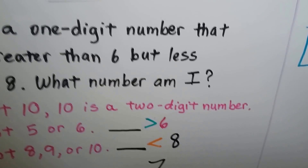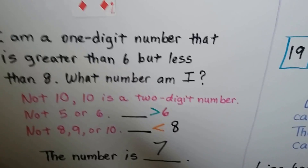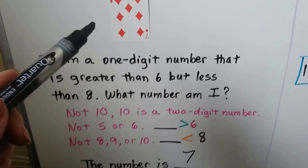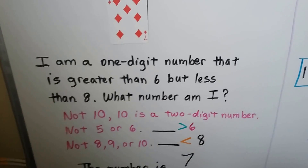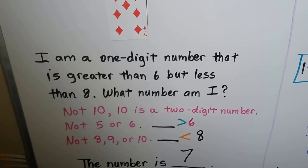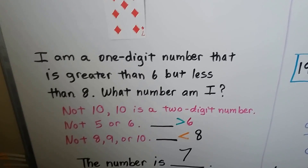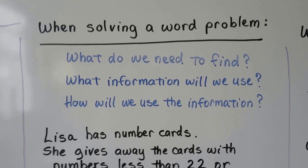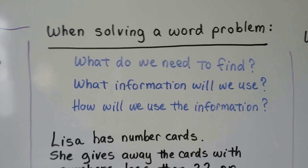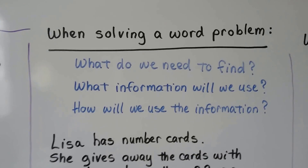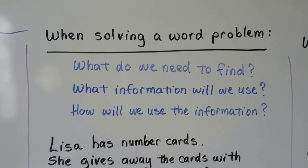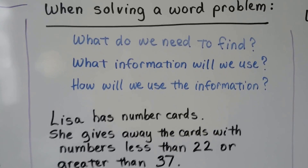We used the clues in the riddle to figure out the cards that didn't fit, so we could find the one left over — that's the answer. When solving a word problem, we need to ask ourselves: what do we need to find, what information will we use, and how will we use the information.